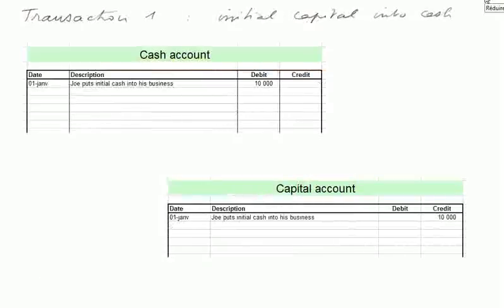Transaction one — we are already familiar with this. Initial capital is put into the firm. The cash account is debited 10,000 euros, because it's cash going into the business to start operations. And there is an account recording the value going out — that is, a receipt given to Joe for this initial cash — and that account is credited 10,000 euros.